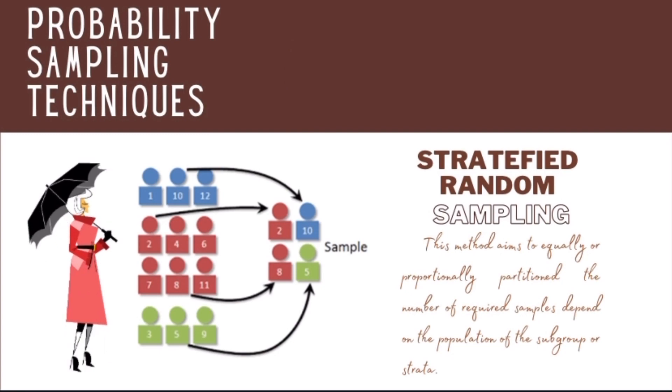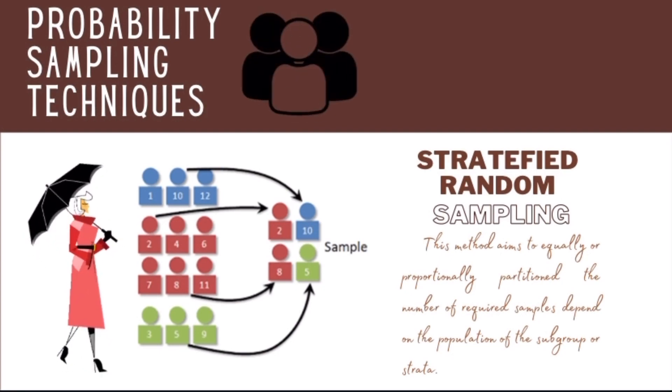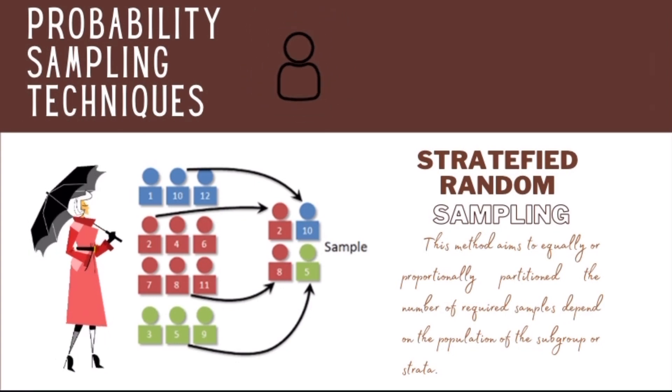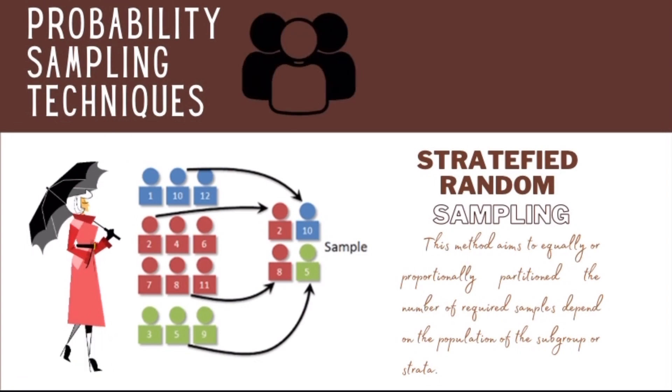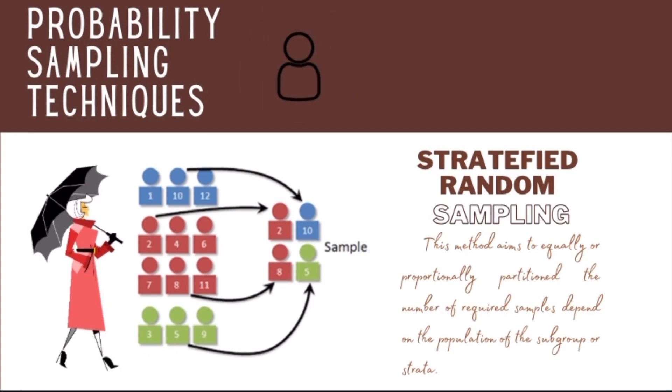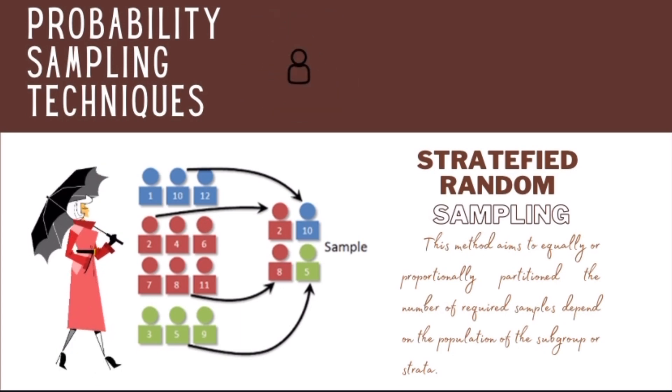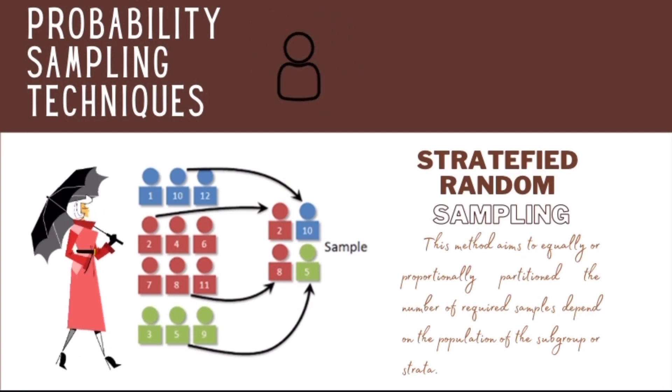Next is stratified random sampling. This method aims to equally or proportionally partition the number of required samples depending on the population of the subgroup or strata. In stratified random sampling or stratification, the strata are formed based on members' shared attributes or characteristics. Example: suppose that the sample should represent the three groups. In this figure, we have three groups, the blue, red, and green. Based on the subgroup population or strata, the stratified random sample will be obtained using the formula: sample size divided by the population size multiplied by the stratum size.